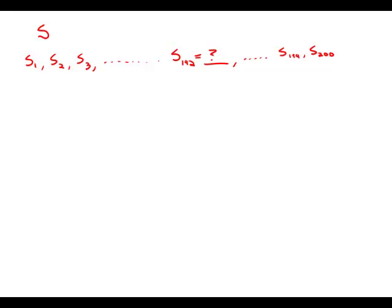If sequence S has 200 terms, what is the 192nd term of S? Statement number one tells us that the first term equals negative 40. Well, by itself, just knowing the value of the first term and nothing else about the sequence, this statement by itself is insufficient.